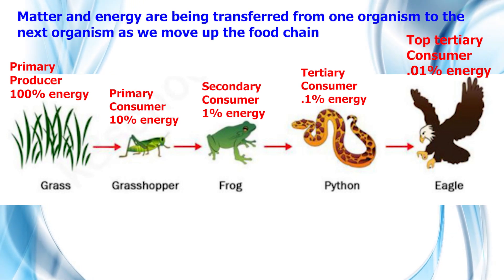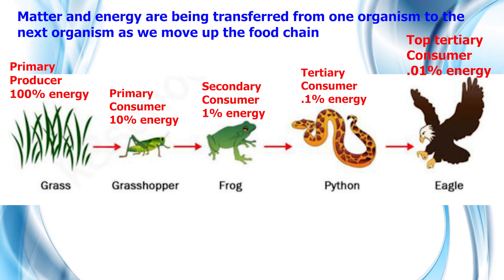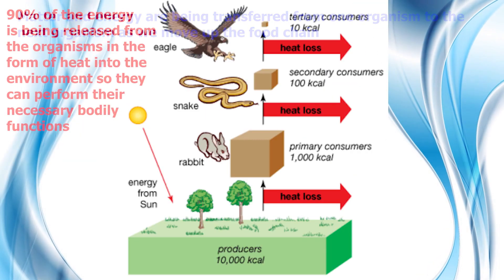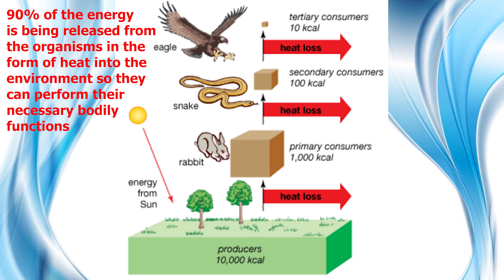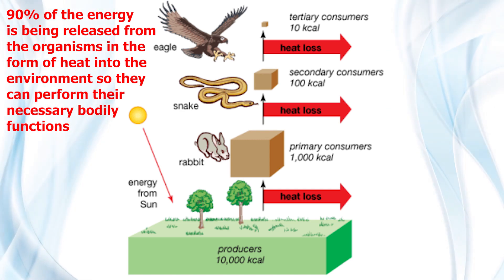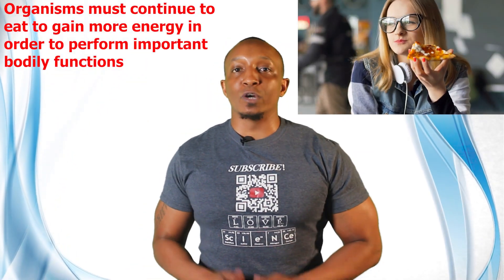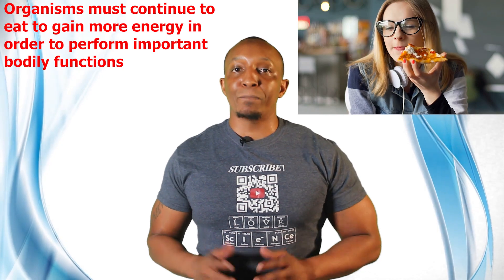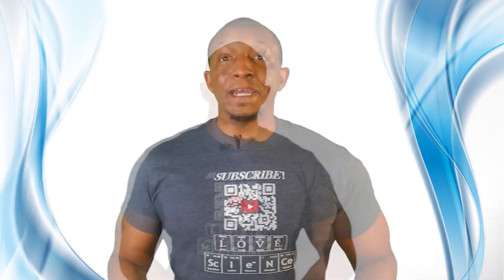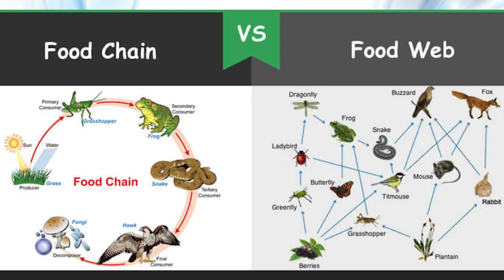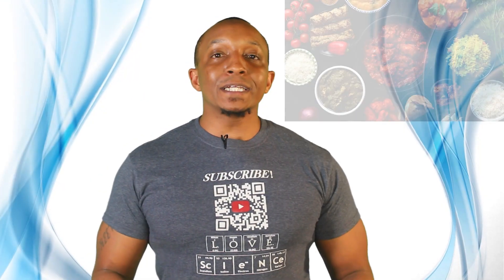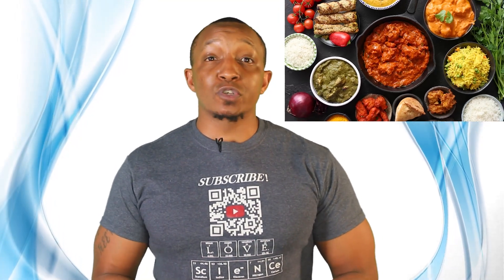Notice how as we move up the food chain, matter and energy are being transferred from one organism to another. As we move up, more and more of the energy is being released into the environment as heat, due to organisms performing necessary bodily functions. This is why organisms must continue to eat in order to gain more energy. Now let's take a look at food webs, which are like a bunch of food chains combined together. Remember, most organisms don't eat just one type of food, so there are many ways energy can flow in a food web.